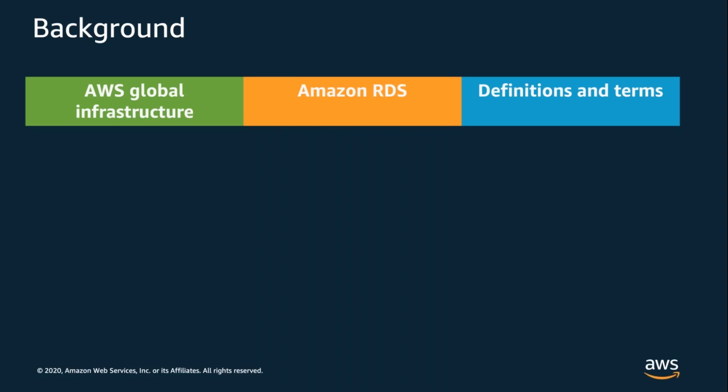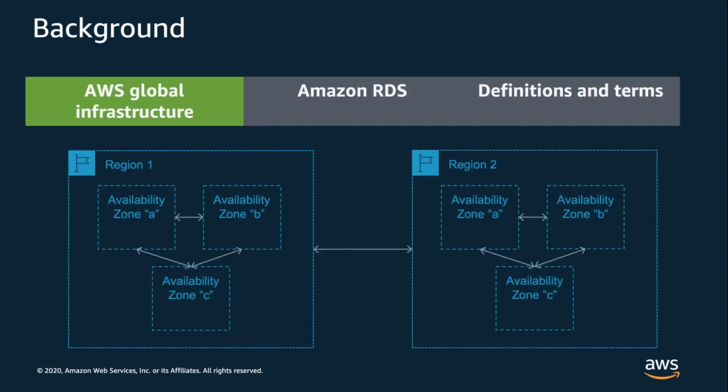This is a deep dive so I'm also going to assume you know a little bit about AWS's region and availability zone architecture, the Amazon Relational Database Service, and have a high-level understanding of features and concepts for high availability. But let's take a quick glance at each just to re-familiarize ourselves. The region and availability zone architecture is foundational to how we think about availability at AWS today, spanning 22 regions and 69 availability zones globally.